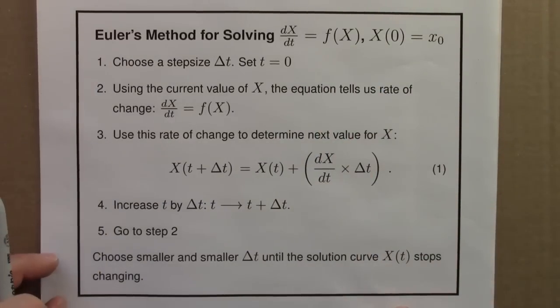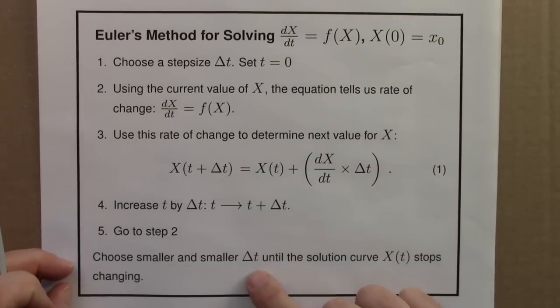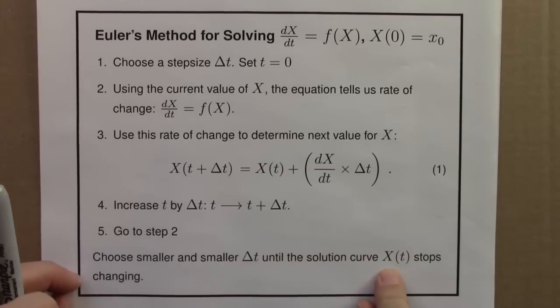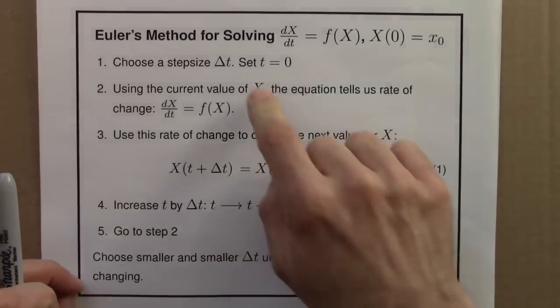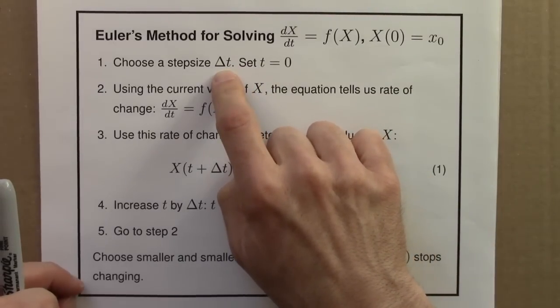So in practice, one would choose smaller and smaller delta t until the solution curve stops changing. So if you chose a delta t of 2, and then 1, and then 0.01, and 0.001,